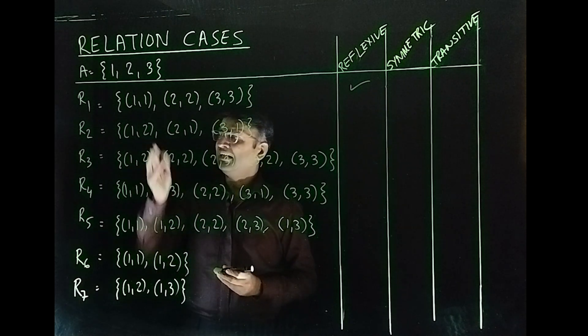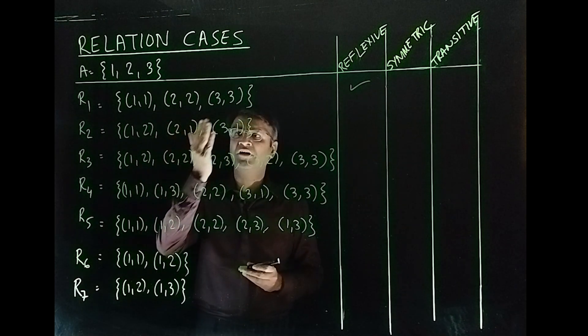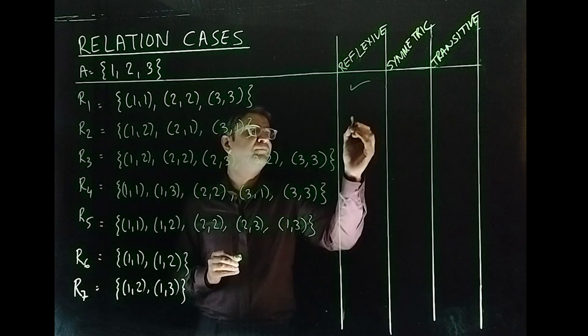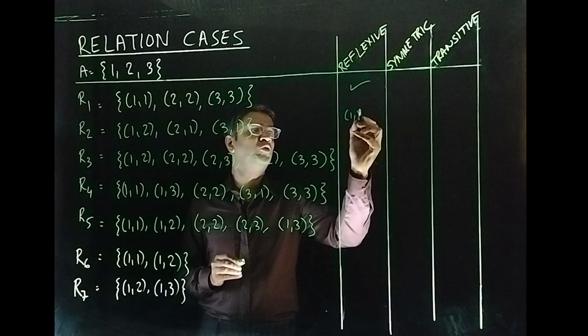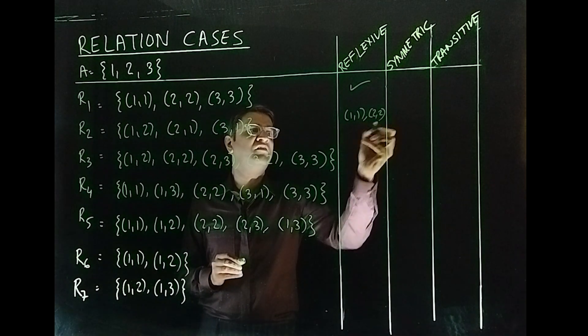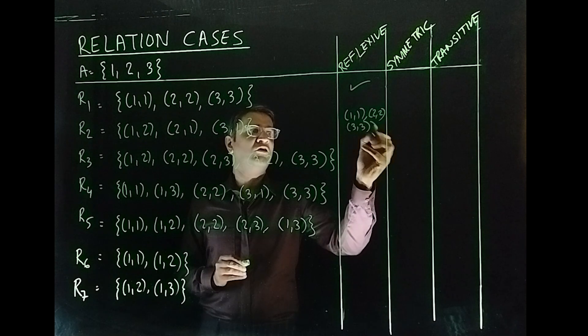What about R₂? It does not have (1,1), it does not have (2,2) and (3,3). So since (1,1), (2,2), (3,3), none of them are present, it is not reflexive.